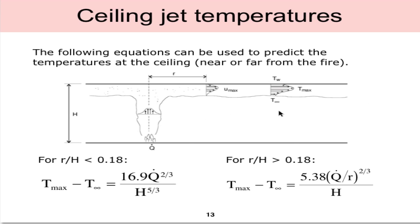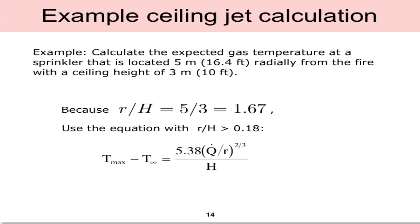There are equations from the textbook that can be used to predict the temperatures at the ceiling, either in the near field of the fire or some radial distance r from the fire. These two equations are given for different conditions. In this case, if the ratio of r over h is less than 0.18, we use this equation. In the case where r over h is greater than 0.18, we use this equation. Depending on if we're near or far from the fire, these different empirical equations apply.